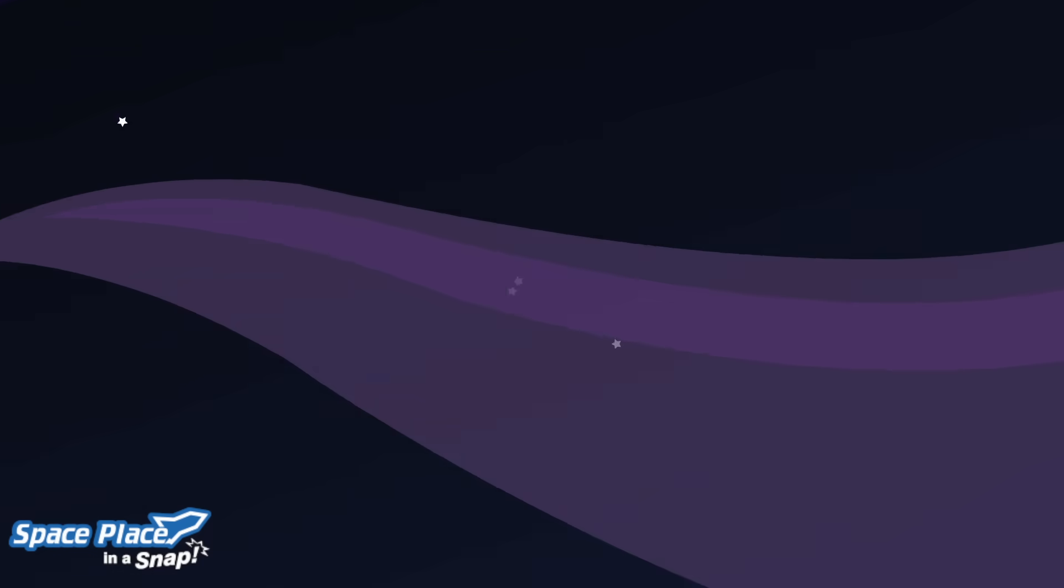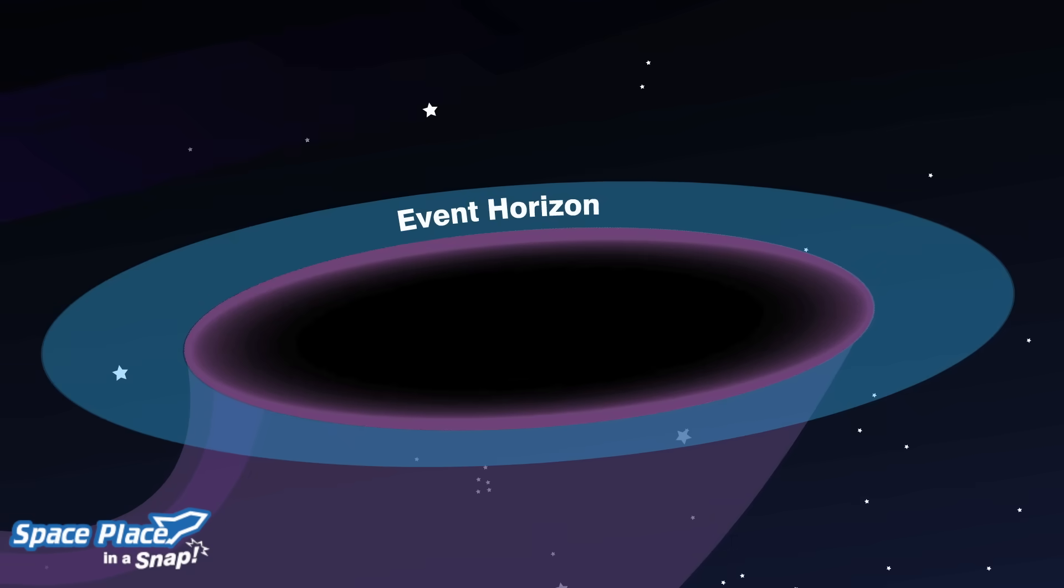This circle is known as the event horizon. An event horizon is probably what you are thinking of when you think of a black hole.